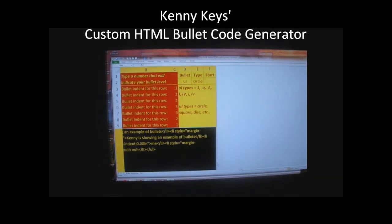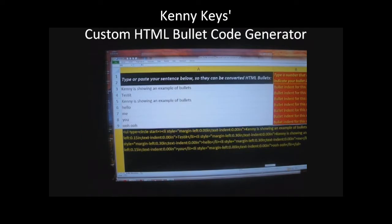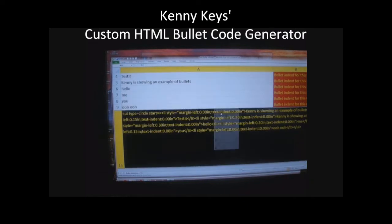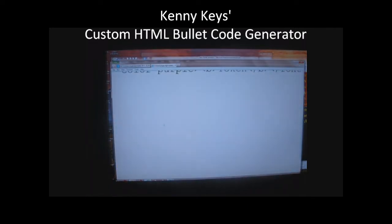The red section is the level of the bullet — one, two, three. And the yellow section is where I tell it if the bullet style is original or universal, circle, or numbered one, two, three.